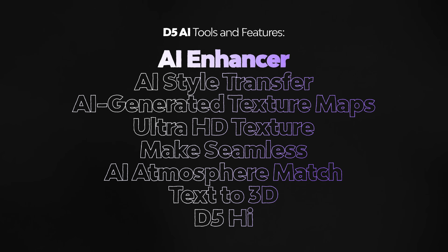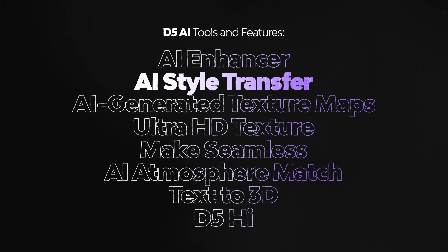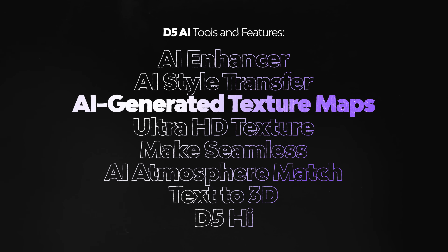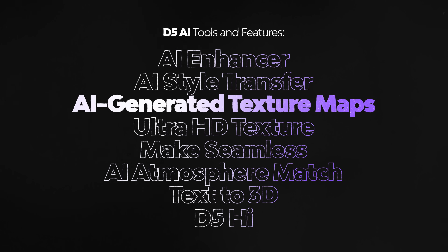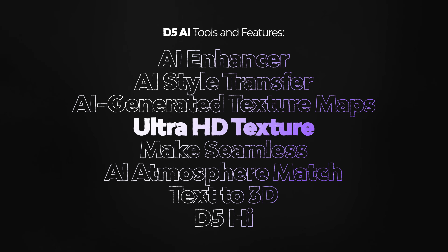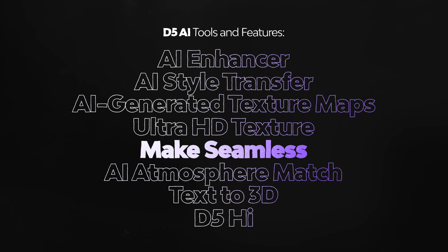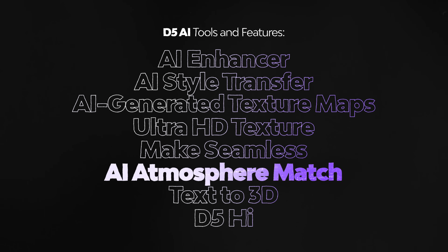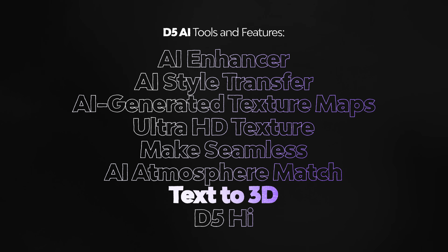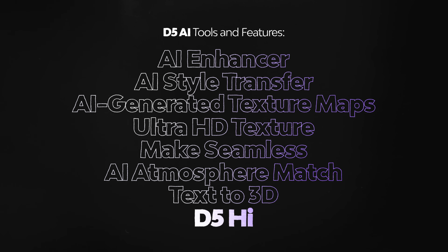Quick recap: AI Enhancer - to add realism with textures and detail improvements, it's a standard workflow at this point and an amazing tool inside D5. AI Style Transfer - a cool way to test different styles, but it can alter a lot of your project so use it with caution. AI Generated Texture Maps - super handy to use specific textures and turn them into a PBR material. Ultra HD Texture - upscale smaller textures into higher resolution. Make Seamless - quickly get rid of seams on textures not ready for 3D yet. AI Atmosphere Match - great for getting started with scene settings and rapidly changing moods, but remember to tweak further. Text to 3D - huge potential, mainly used for decoration and simple objects now but expect a mega update. And D5 High - render with words or image inputs, ideal for early stages of visualization.